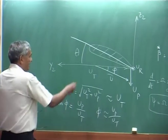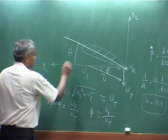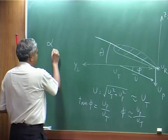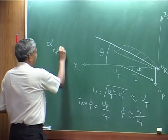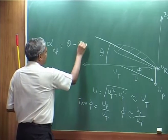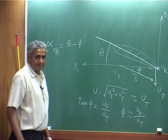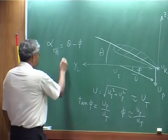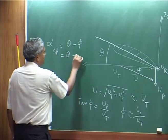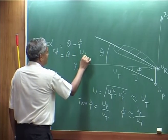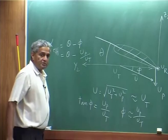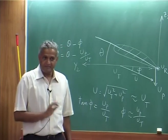That means: since u_p is small, u_p over u_t is small, and tan phi I call it as phi. My effective angle of attack alpha-effective is theta minus phi, which is theta minus u_p over u_t. Very simple.